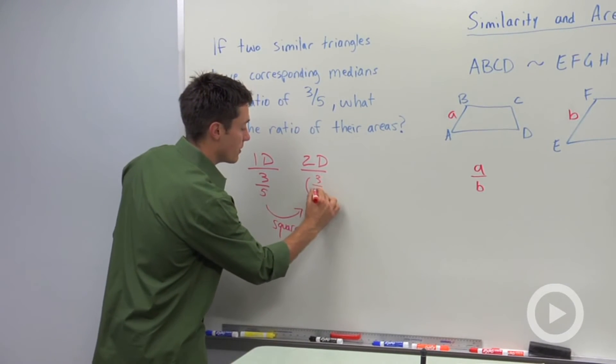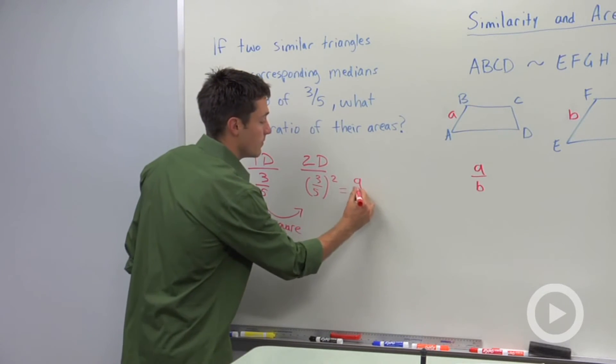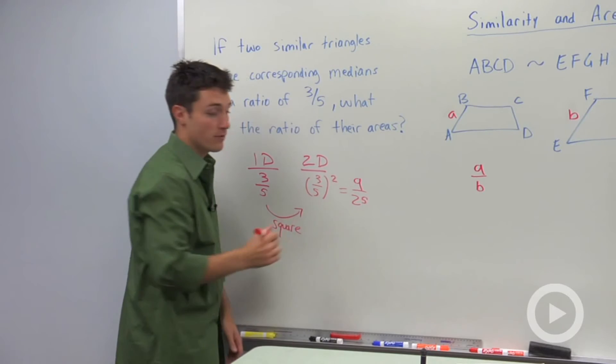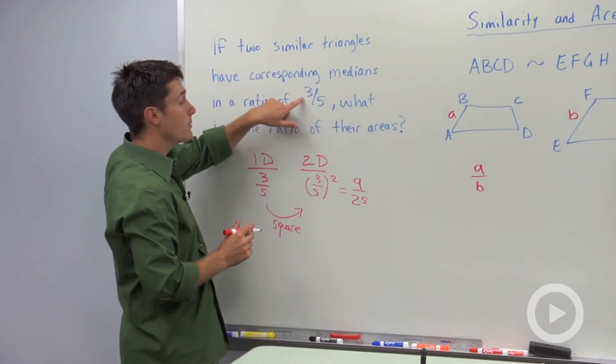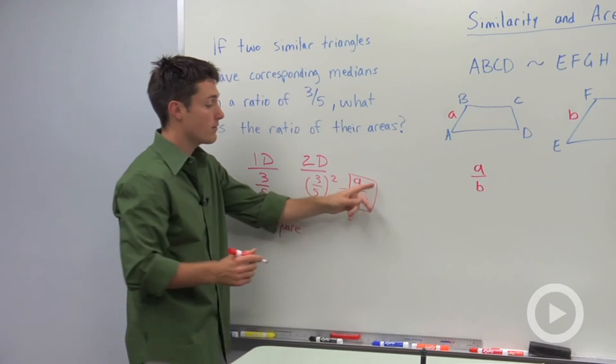So we're going to take three fifths and square it. So three squared is nine, five squared is twenty-five. So notice that the one dimensional ratio is three to five, and the ratio of their areas will be nine to twenty-five.